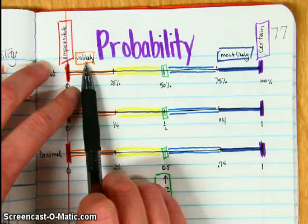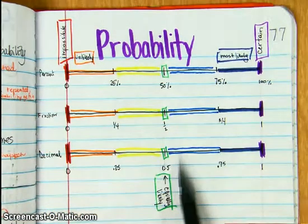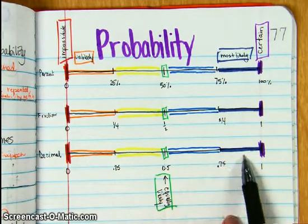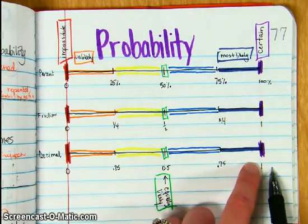Red is impossible, orange is unlikely. Green is equally likely, it's right there in the middle. Yellow, most likely is indigo, violet is certain it's going to happen.